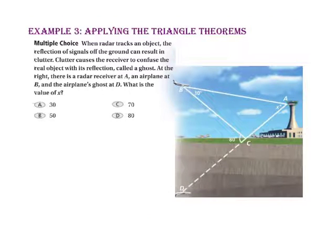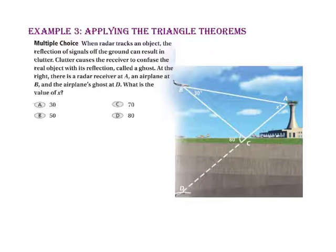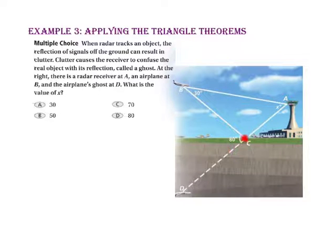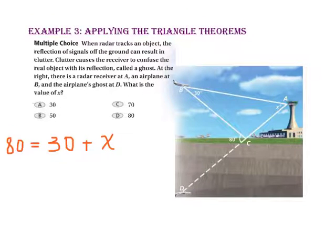In example 3, we apply the triangle theorems. When radar tracks an object, the reflection of signals off the ground can result in clutter, causing the receiver to confuse the real object with its reflection — called a ghost. There is a radar receiver at A, an airplane at B, and the airplane's ghost at D. What is the value of X? Since angle BCD is an exterior angle to triangle ABC, 80 equals the sum of angle B and angle A. Using the subtraction property of equality and subtracting 30 from both sides, X equals 50, so the answer is B.